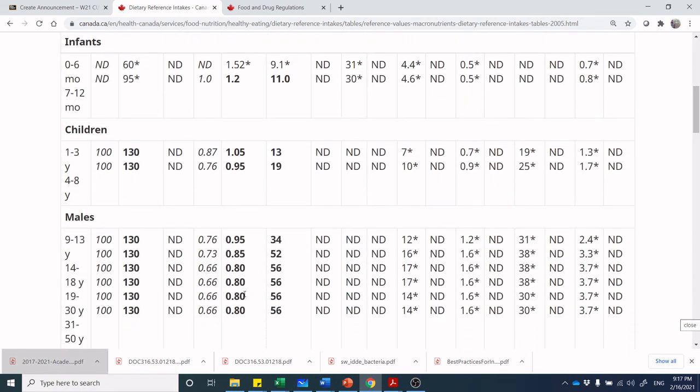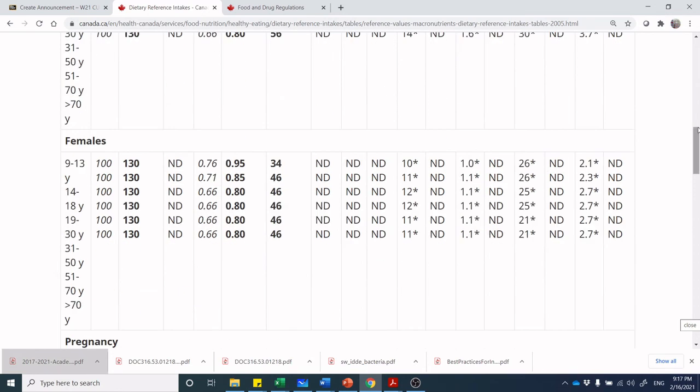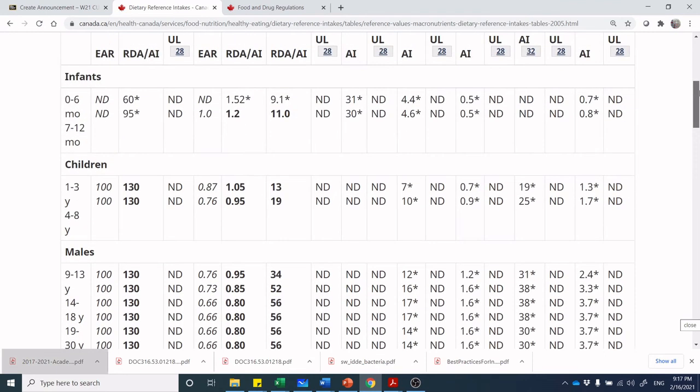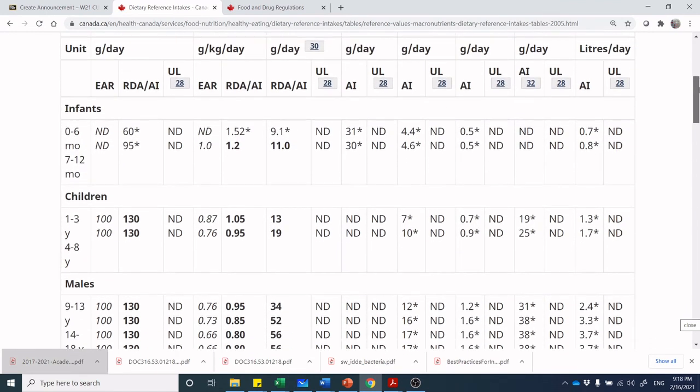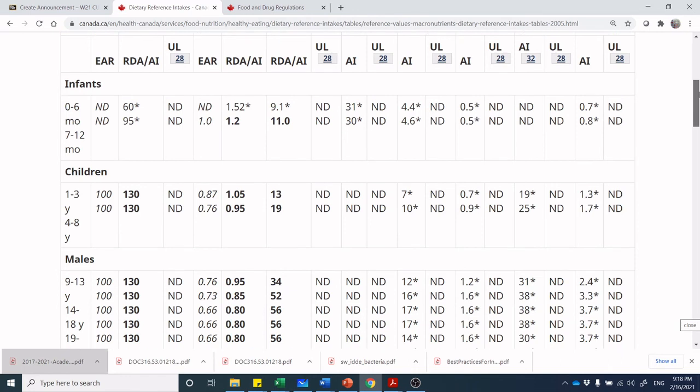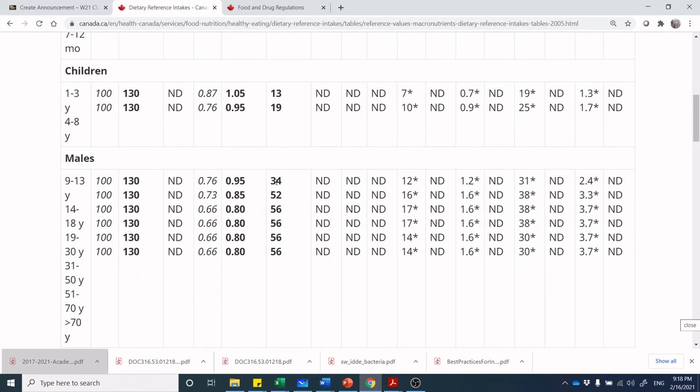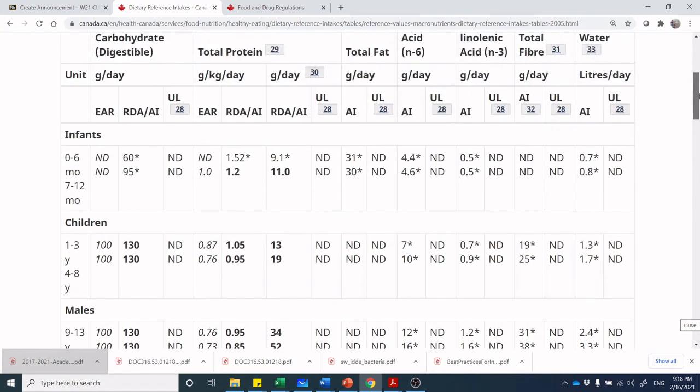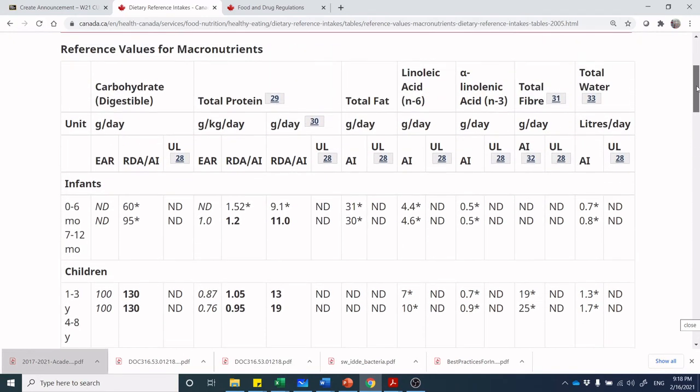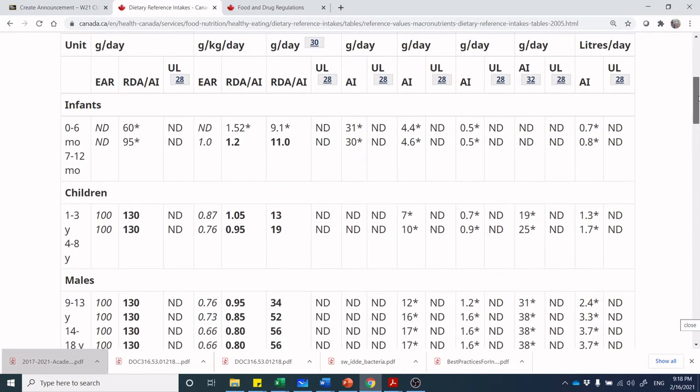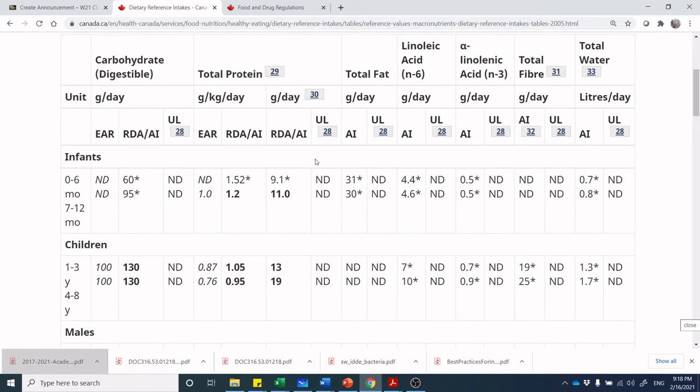So while you may be looking at these protein values and say wait a second, I may be a young adult male, why is it 0.08 grams of protein? It's per kilogram of your body weight. So if you weighed, let's say you are a larger man and you weigh 100 kilos, you would need to have 0.8 times 100, which would be 80 grams of protein.